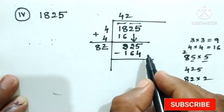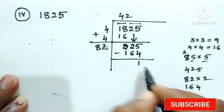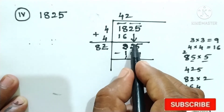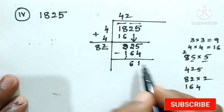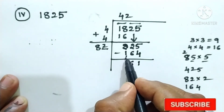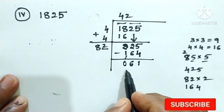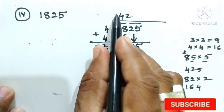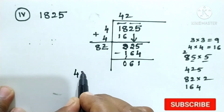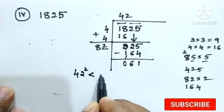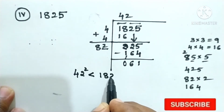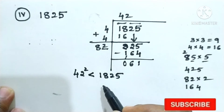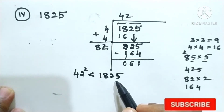Subtract: 5 minus 4 is 1. Then 2 is 6; carry 1, it becomes 12. 12 minus 6 is 6. Then 1 plus 1 is 2, and 2 minus 2 is 0. So the remainder is 61. Therefore, 42 squared is less than 1825.